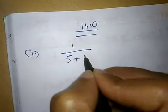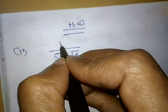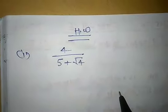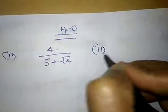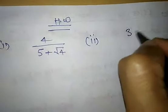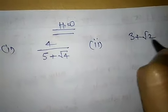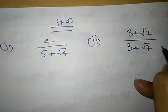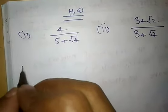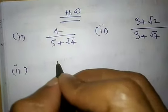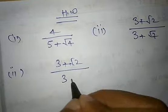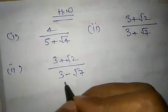First: 1 upon 5 plus root 4, and 4 upon 5 plus root 4. Second: 3 plus root 2 by 3 plus root 7. Third: 3 plus root 2 by 3 minus root 7. Thank you.